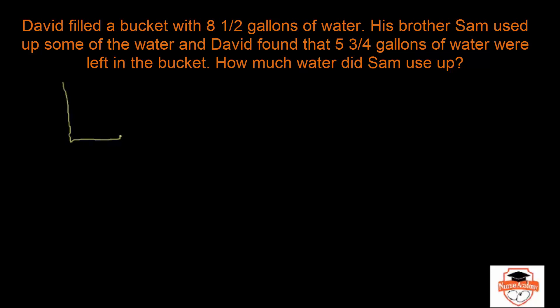So there's a bucket and David filled this up with 8 1/2 gallons of water. So let's say this is what David filled this up with, 8 1/2. Now his brother came over Sam and he used up some of the water and then David found that 5 3/4 gallons were left. So this is what he started with. Some time later he figured out that, oh, okay, so it has reduced to 5 3/4 gallons.